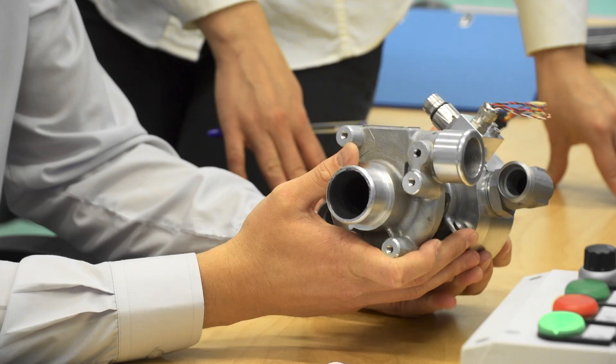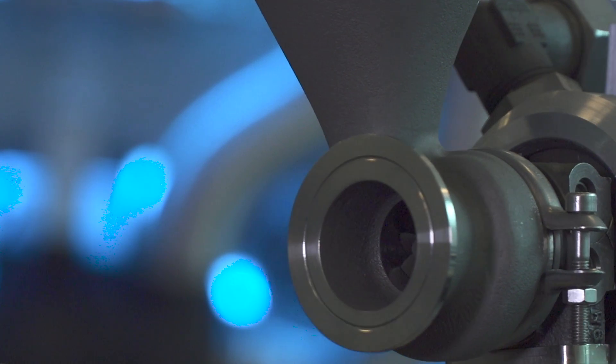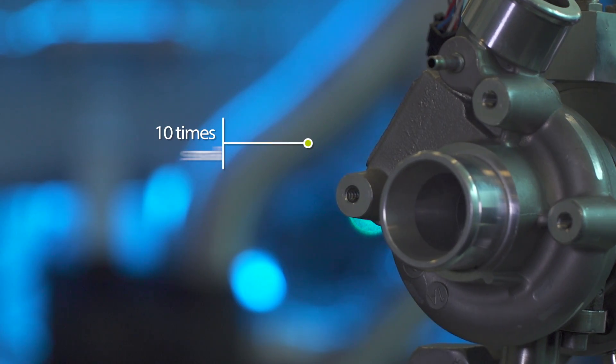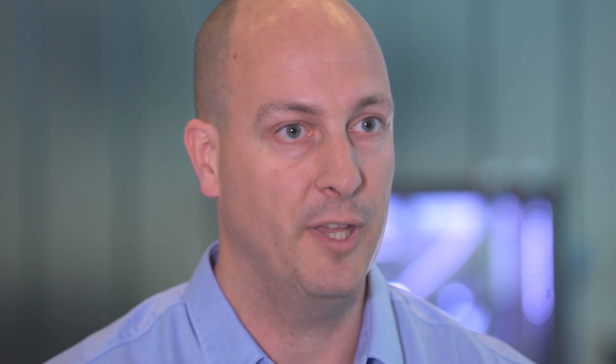The core of the Enertwin consists of a gas turbine which is based on automotive turbocharger components. By using these components we were able to make a gas turbine ten times smaller than the currently smallest gas turbine. Therefore it's now suitable for household applications.